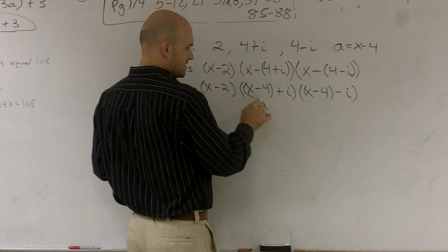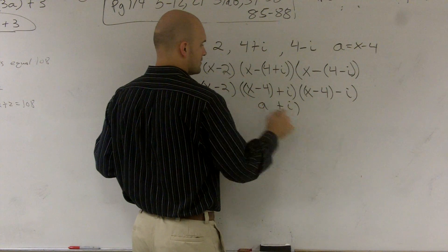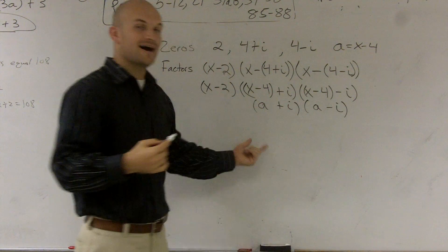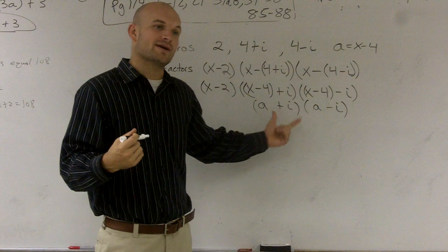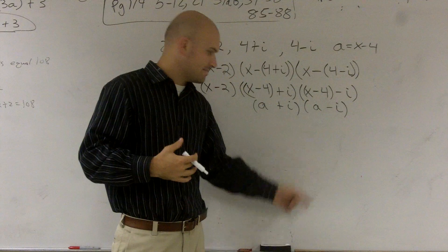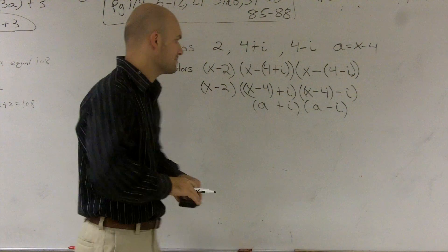a equals x-4. So therefore, it's (a+i) times (a-i). And now what you know is we have a difference of two squares. So when I multiply these, I'm going to get rid of my middle terms. So this is something very important that you always want to look out for in mathematics.